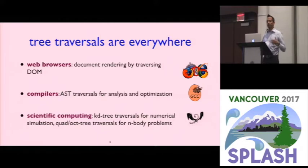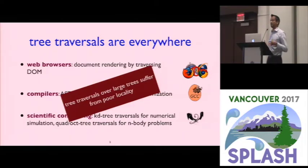Something you might be less familiar with is in the scientific computing context, there are a lot of applications that are structured around many traversals of trees. For example, the Madness numerical simulation code or classic n-body algorithms like fast multipole method or Barnes-Hut. Now, one issue with writing traversals over trees is that they're a really convenient way of expressing the computation that you want to do.